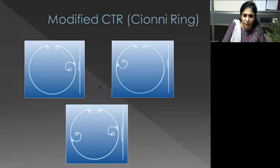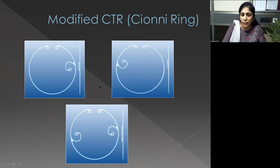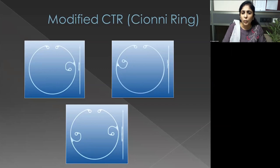In patients with the most severe subluxation, a CTR alone may not be enough for capsular bag stabilization — particularly postoperatively. If a patient has progressive zonular loss, such as Marfan syndrome, spherophakia, or large traumatic subluxation in a young patient, there is concern the IOL-capsular bag complex will decenter or dislocate after a few years. In such cases, the Cionni ring is very useful.